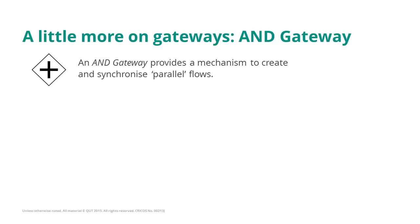Another type of gateway is the AND gateway. The AND gateway provides a mechanism to create and synchronise parallel flows, as those that we saw in our order to cash process. In fact, the activities in the two parallel flows — ship goods and emit invoice — are independent of each other and can be performed in any order.